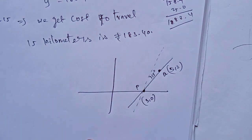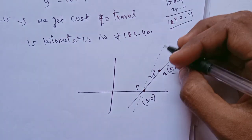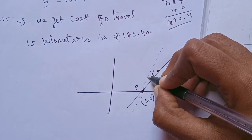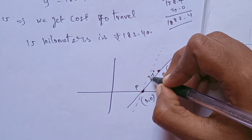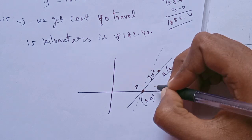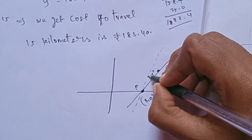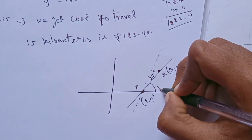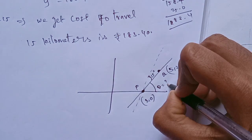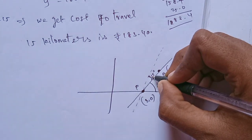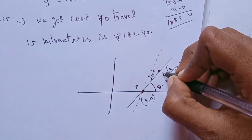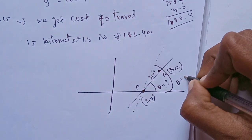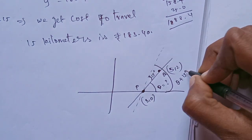If we have one point, we can find the equation. So we can find out what to do with the angle. The total angle is theta plus 15 degrees.